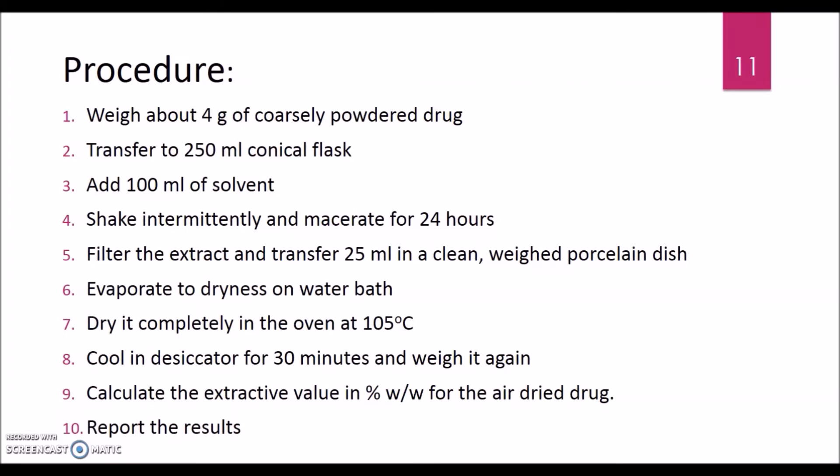First, take 4 grams of coarsely powdered crude drug and transfer it to a 250 ml conical flask. Add 100 ml of solvent. We will use three different solvents in three different conical flasks: water, alcohol, and ether. Then shake intermittently to ensure that maceration is being done properly. You can frequently shake it and keep it for 24 hours.